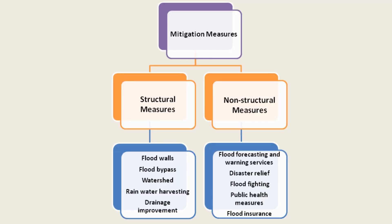Let us move on to floods and mitigation measures. Flood is the most frequent type of natural disaster and occurs when an overflow of water submerges land that is usually dry. Mitigation measures are divided into two: structural measures and non-structural measures. Structural measures include flood walls, flood bypass, water shed, rainwater harvesting and drainage improvement. Non-structural measures include flood forecasting and warning services, disaster relief, flood fighting, public health measures and flood insurance.